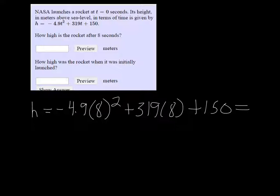So I'm going to put this in my calculator carefully. I know 8 squared is 64, and I get 2388.4, and that's going to mean meters.